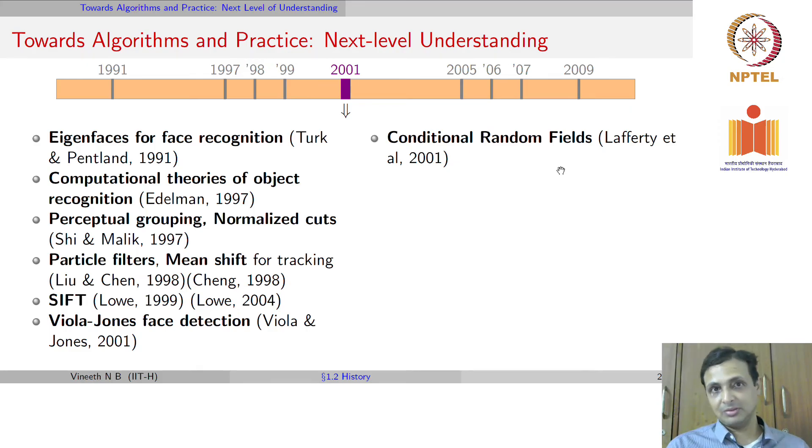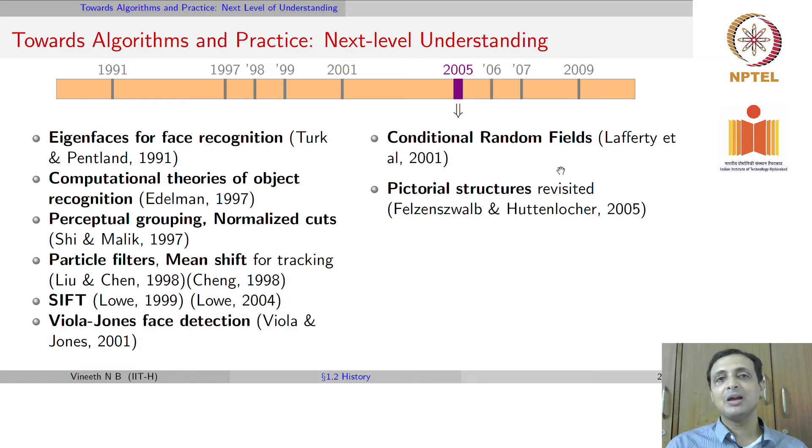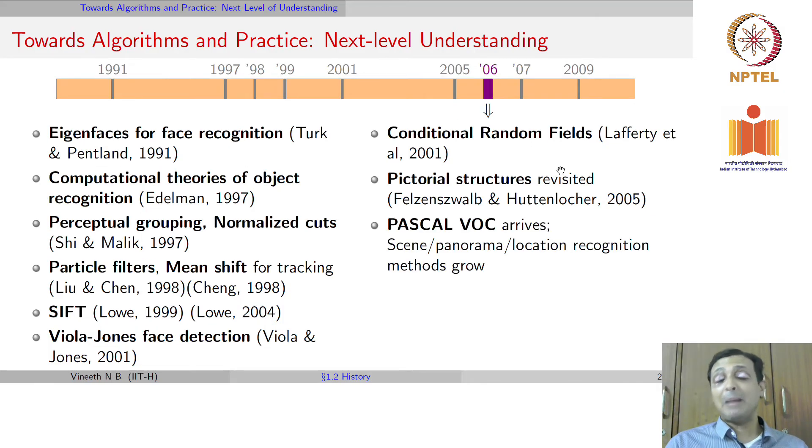Then pictorial structures, the method proposed in 1973, was revisited in 2005. They came up with an improved statistical approach to estimate the individual parts and the connections between parts, which was called pictorial structures at that time. They showed that it could work in practice and give good performance for image matching. Pascal VOC, which is a dataset that is popular to this day, actually started in 2005.